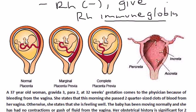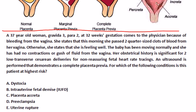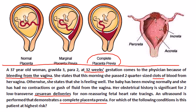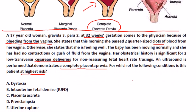Let's finish with a clinical vignette. A 37-year-old woman, Gravida 3 Para 2 at 32 weeks gestation, comes to the physician because of vaginal bleeding. She states that this morning she passed two quarter-sized clots of blood from her vagina. She is otherwise feeling well, the baby has been moving normally, and she has had no contractions or gush of fluid. Her obstetrical history is significant for two low transverse cesarean deliveries. An ultrasound demonstrates a complete placenta previa. For which condition is this patient at highest risk?